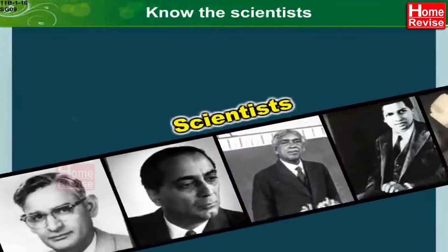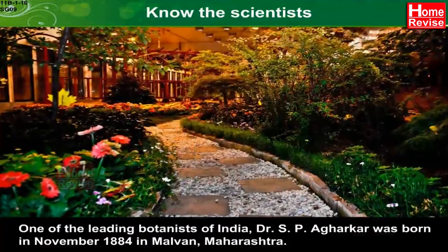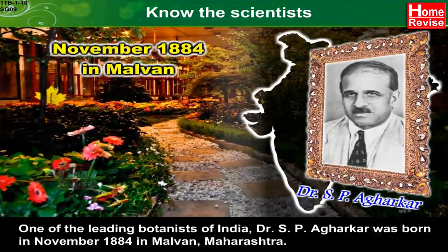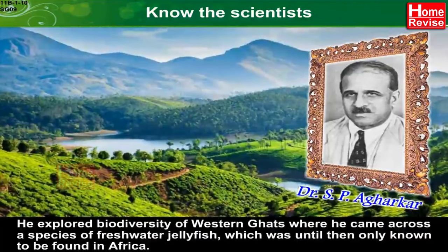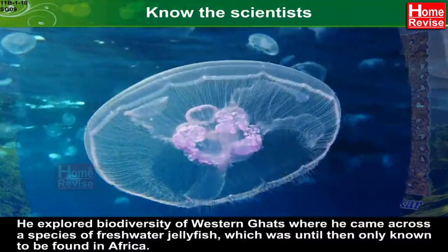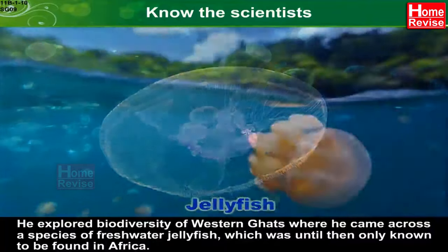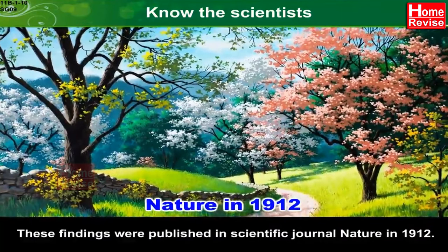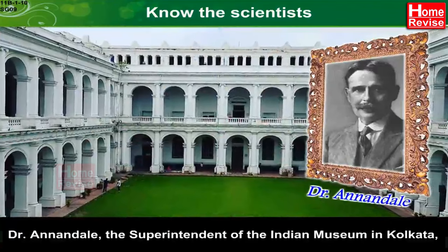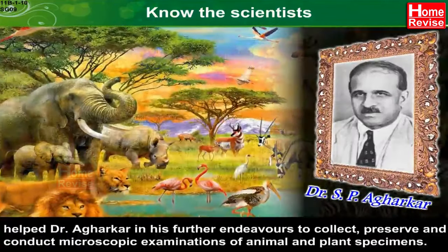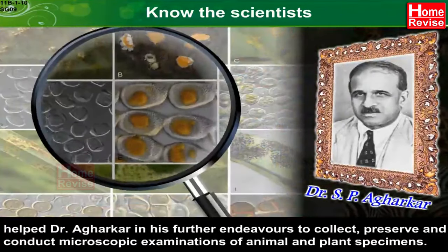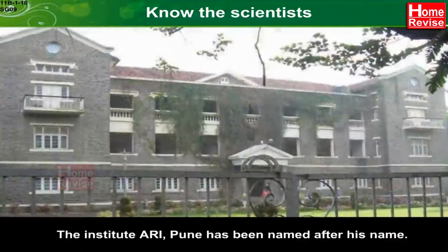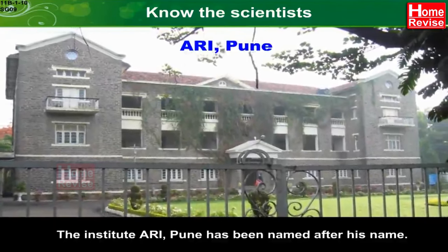Know the Scientists: Dr. S.P. Agarkar — one of the leading botanists of India — was born in November 1884 in Malvan, Maharashtra. He explored the biodiversity of the Western Ghats, where he came across a species of freshwater jellyfish which was until then only known to be found in Africa. These findings were published in the scientific journal Nature in 1912. Dr. Anna Dale, superintendent of the Indian Museum in Kolkata, helped Dr. Agarkar collect, preserve, and conduct microscopic examinations of animal and plant specimens. The institute A.R.I. Pune has been named after him.